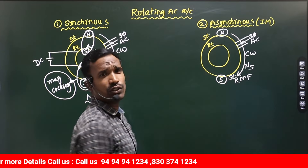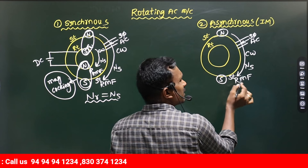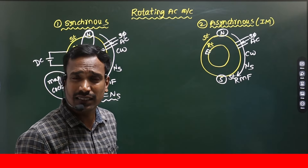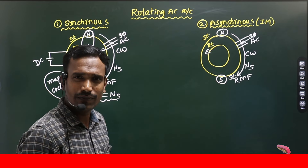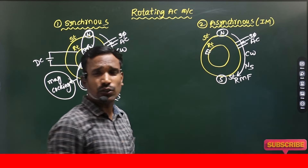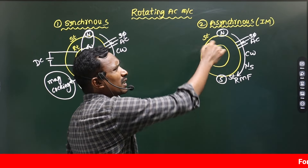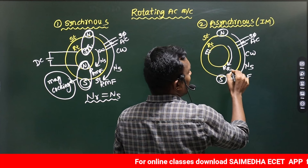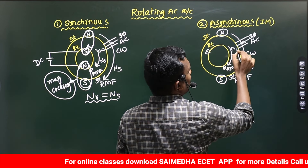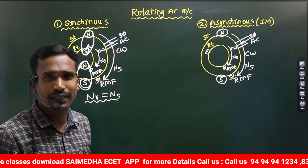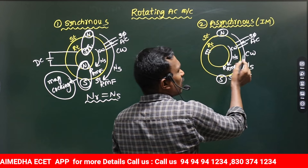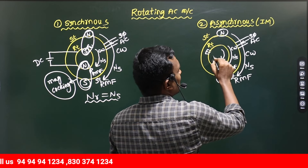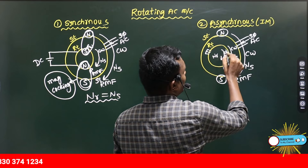In the Induction machine, there is no separate excitation for the rotor. When the stator flux links with the stationary rotor conductors, an EMF is developed in the rotor. When there is a short circuit path for current, rotor current flows and creates a magnetic field. That rotor magnetic field is also a rotating magnetic field which rotates in clockwise direction at Synchronous speed. Due to interaction of these two fluxes, torque is developed in the rotor.